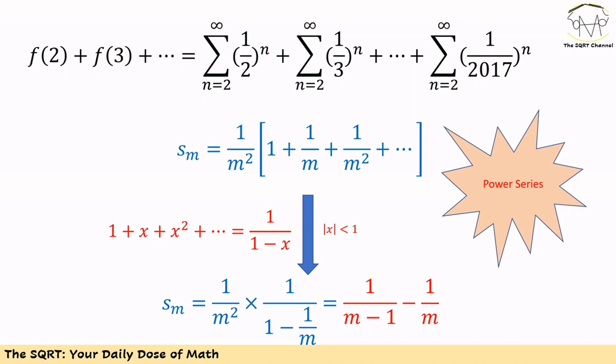To further simplify the equation that we have for s_m, we are going to use a power series equation. Remember 1 plus sigma x to the power of i for i equals 1 to infinity is equal to 1 over 1 minus x if the absolute value of x is less than 1. If we replace this then s_m can be simplified as 1 over m minus 1 minus 1 over m.